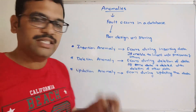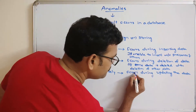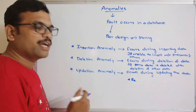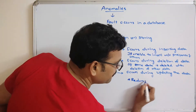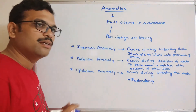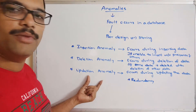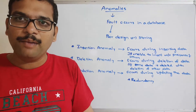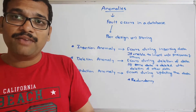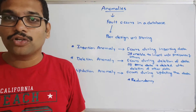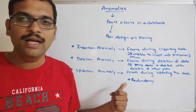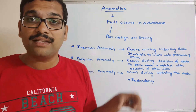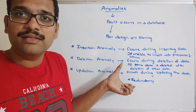For updation anomaly: if our table has redundancy, this anomaly will automatically occur. If you want to update one attribute or one row, it should be reflected in other rows as well because of redundancy. That type of anomaly is called an updation anomaly.